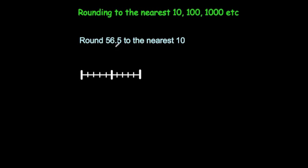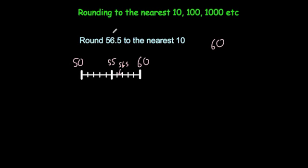Now let's look at some examples with decimal places. Round 56.5 to the nearest 10. If we had 50 here and 60 here, with 55 in the middle, then 56.5 would be somewhere past the middle — closer to 60. So rounding to the nearest 10 gives 60. All you need to do is look at the units digit: if it's 0, 1, 2, 3 or 4 you round down; if it's 5, 6, 7, 8 or 9 you round up. The tenths digit doesn't matter.